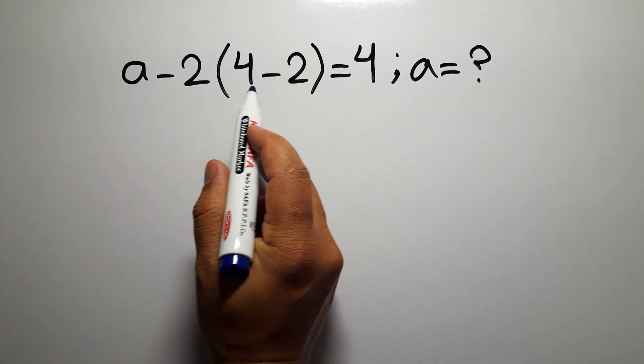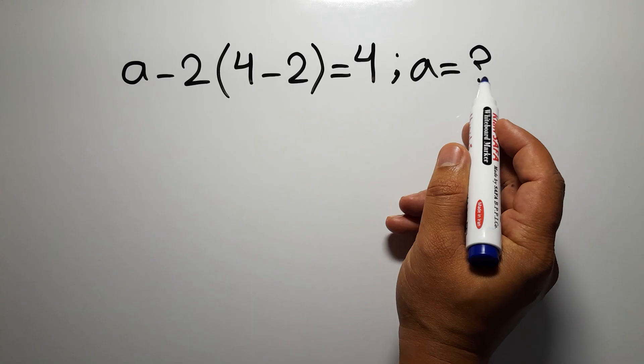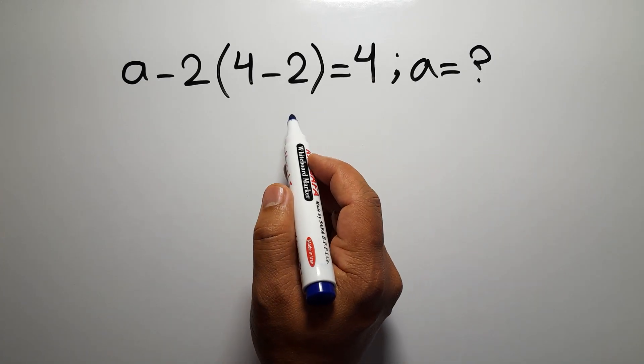a minus 2 times 4 minus 2 equals 4. Our goal is to find the value of a. Are you ready to solve? Let's get started.